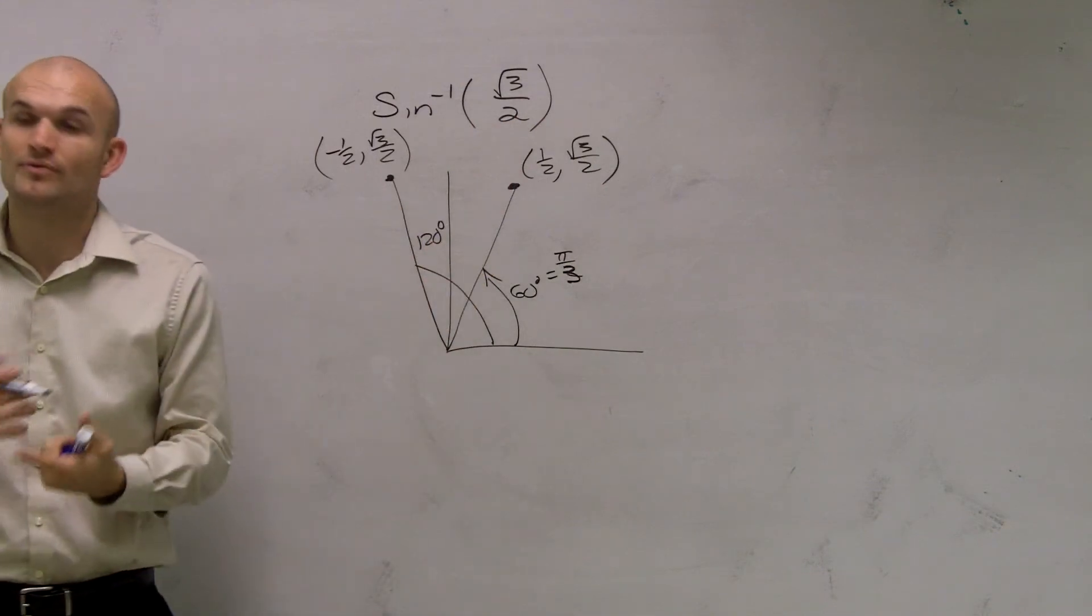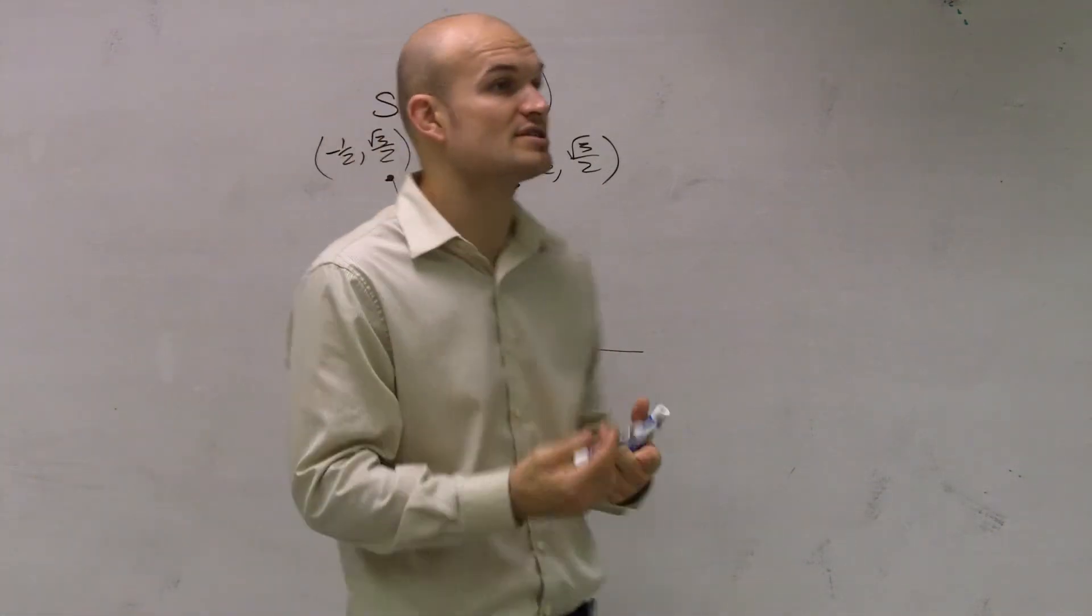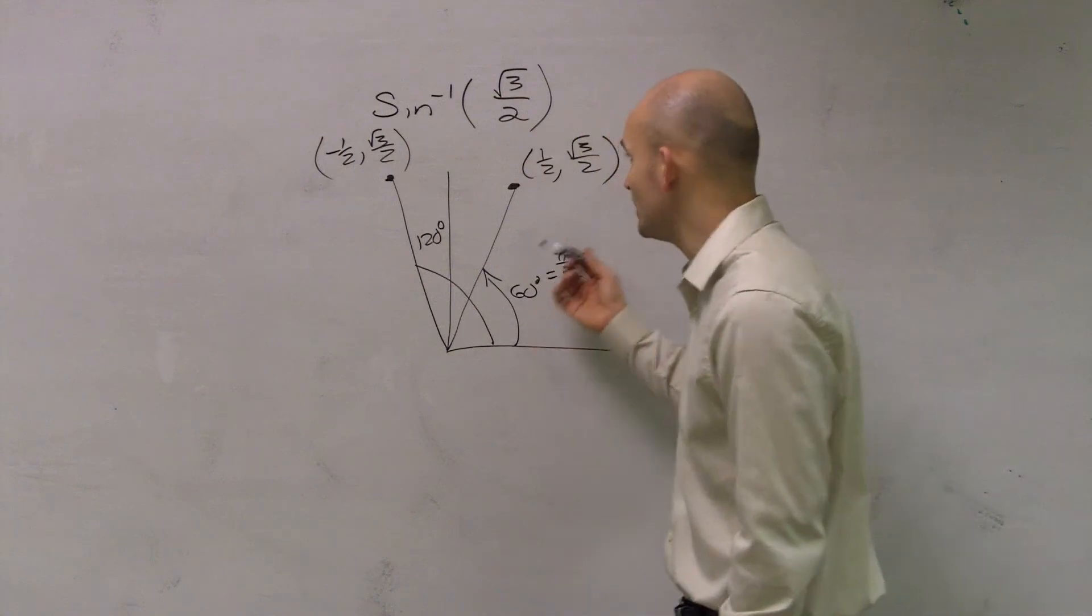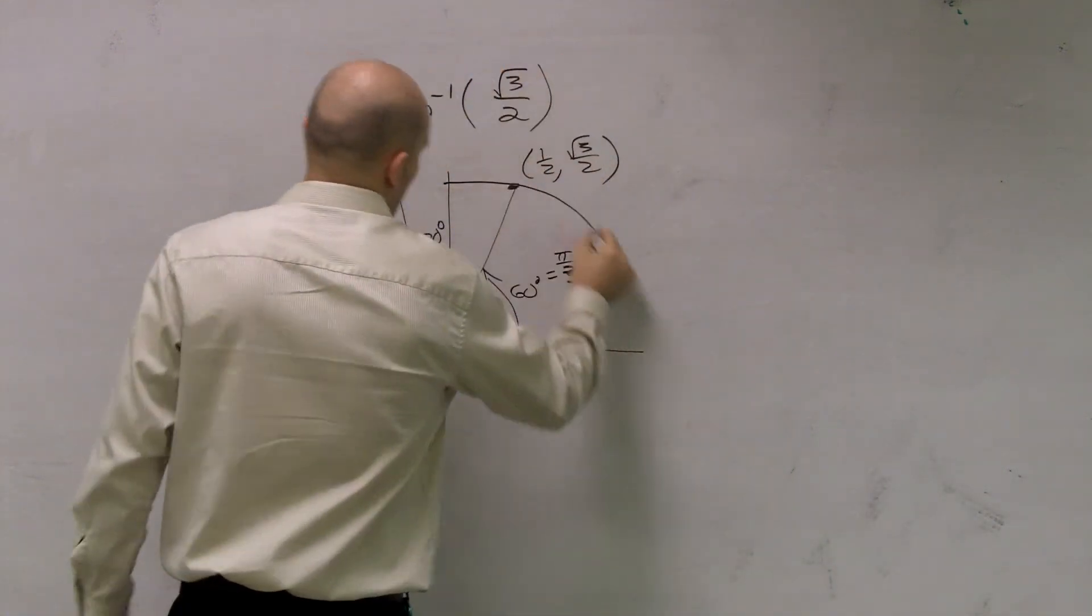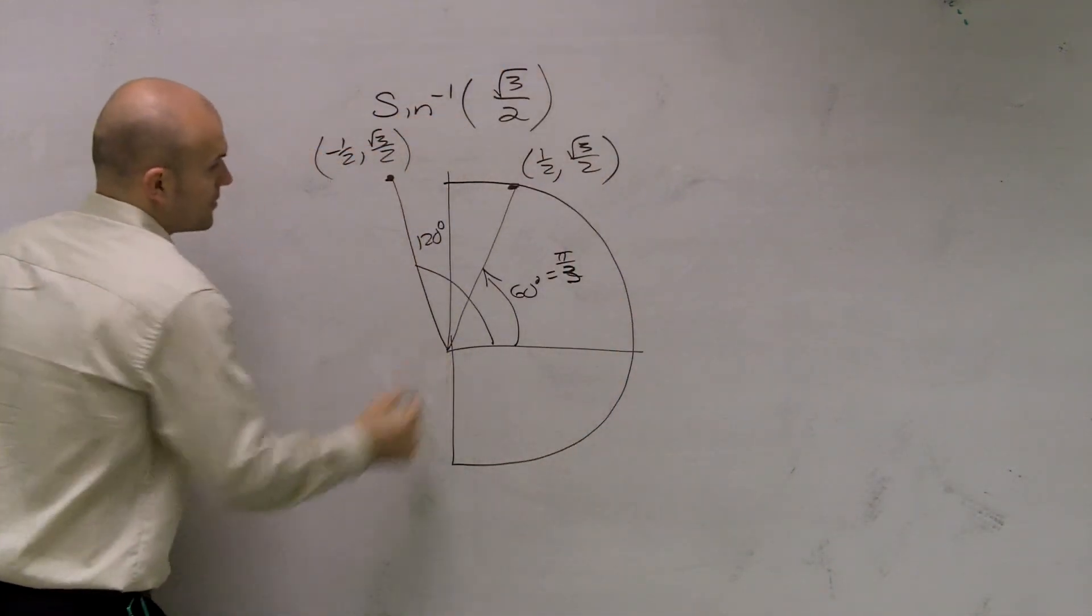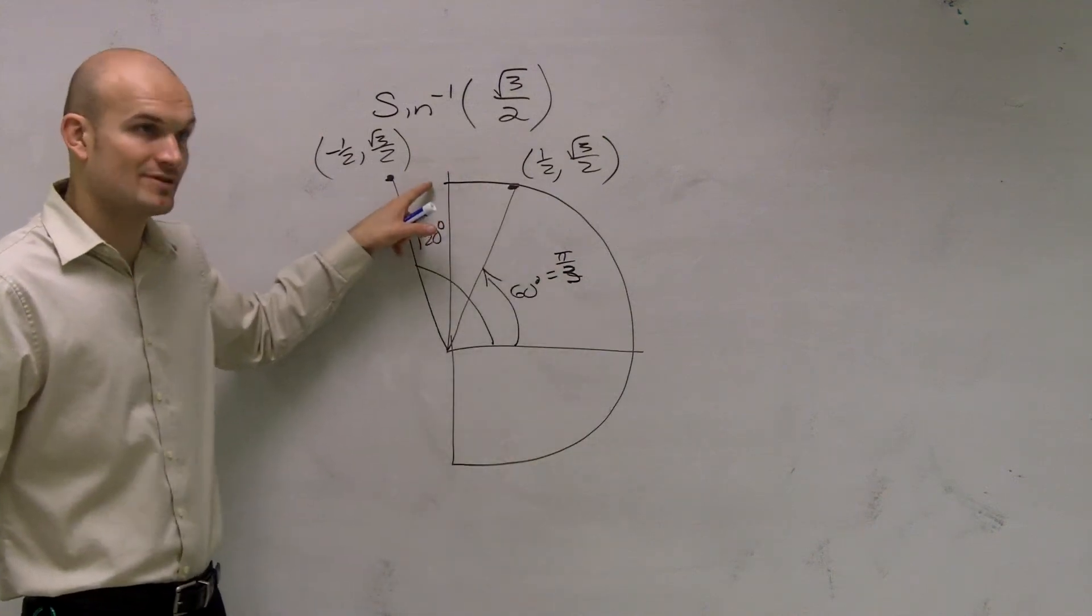But remember what we talked about. The restrictions on your inverse sine are going to only be between negative pi over 2 and pi over 2.